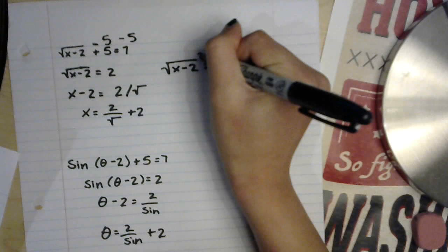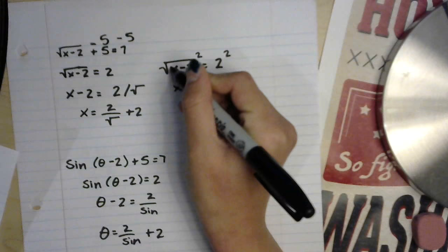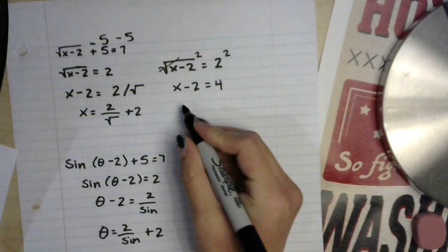And the inverse operation for the square root is a square. So take the square of both sides and then this square cancels out the square root. And we get x minus 2 equals 4.